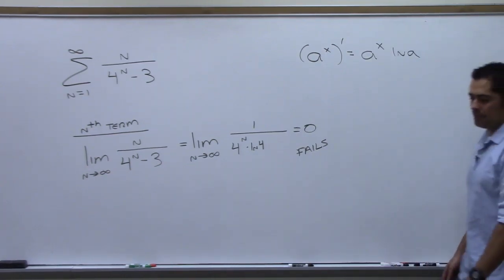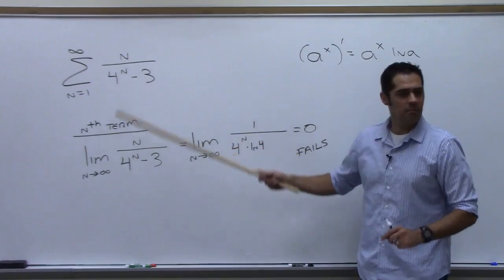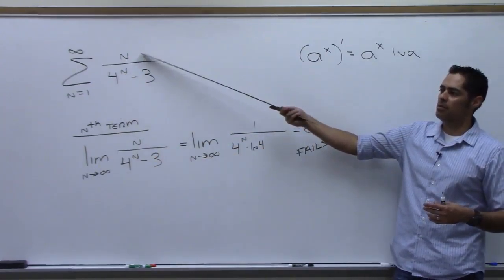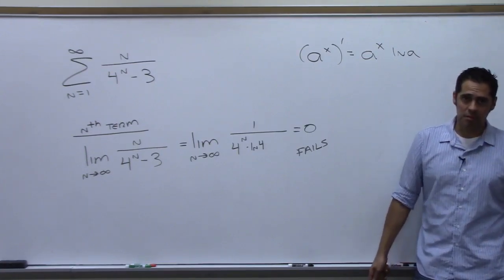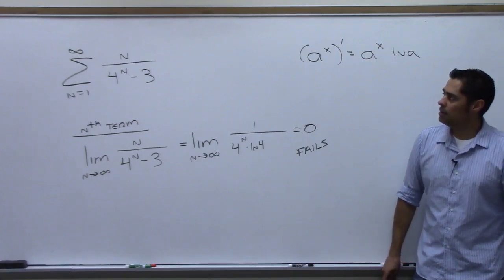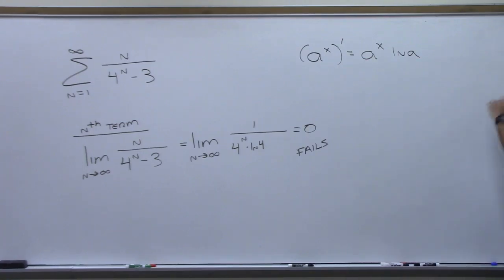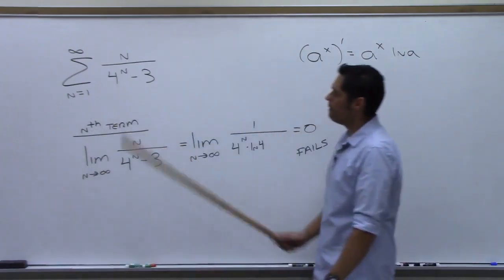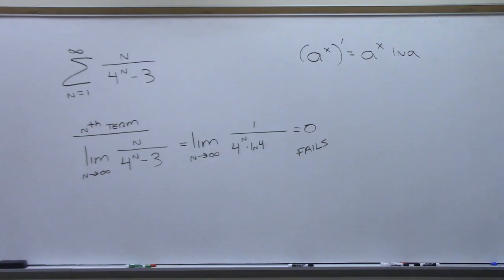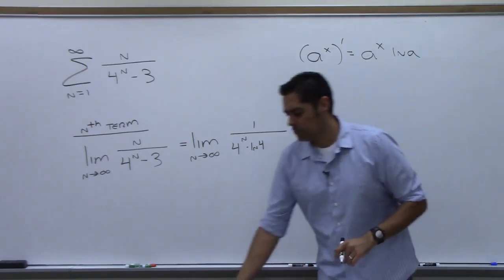Is it geometric? Kind of — I have n in the exponent (4^n), but there's an n on top not in an exponent, so it's not quite geometric. Harmonic? Absolutely not. Telescoping? I don't think we'll get cancellation. P-series? For a p-series you need n in the base — no. Integral test? You don't want to integrate that. Comparison?